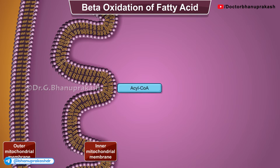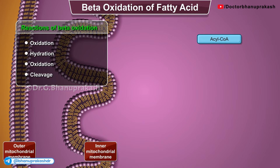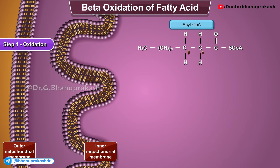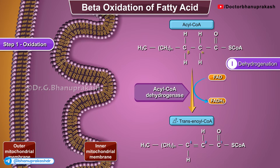Now for the final step: beta-oxidation proper. There are 4 steps in beta-oxidation: oxidation, hydration, oxidation, and cleavage. Step 1 is Oxidation, also known as first dehydrogenation. Oxidation occurs by removal of two hydrogen atoms across alpha and beta carbons. The reaction is catalyzed by the enzyme acyl-CoA dehydrogenase, which is the rate-limiting enzyme of the pathway. This step leads to formation of delta-2-trans-enoyl-CoA, a trans-double bond between C2 and C3. In this step, one FADH2 is formed.